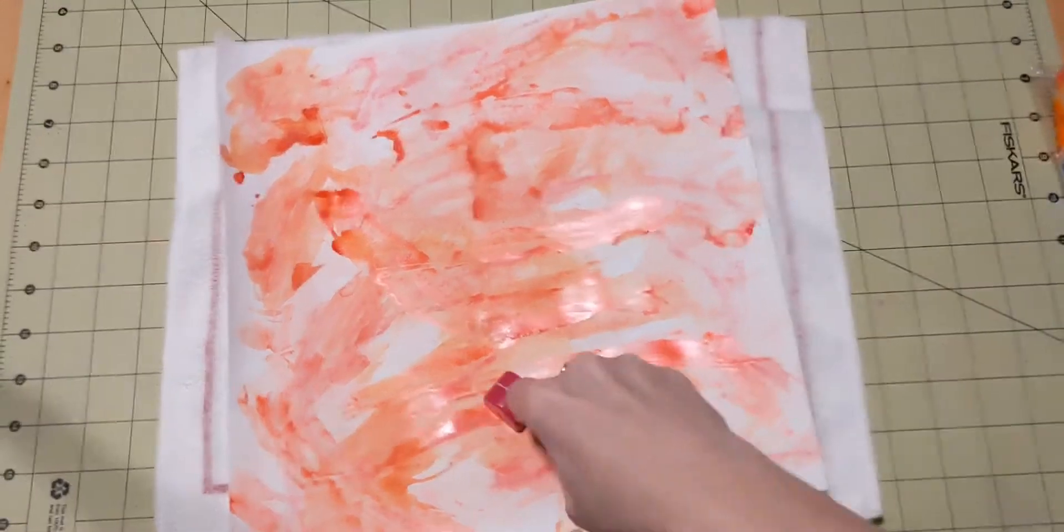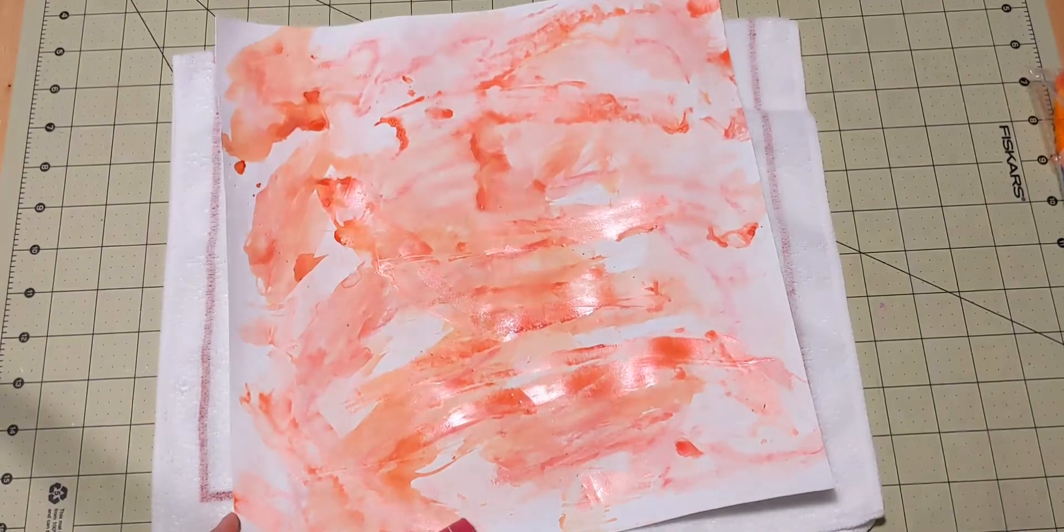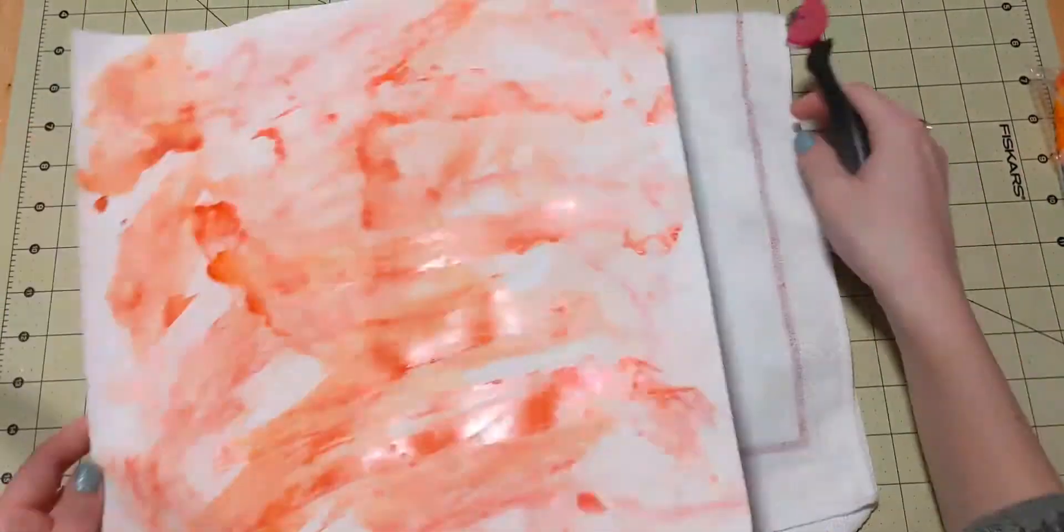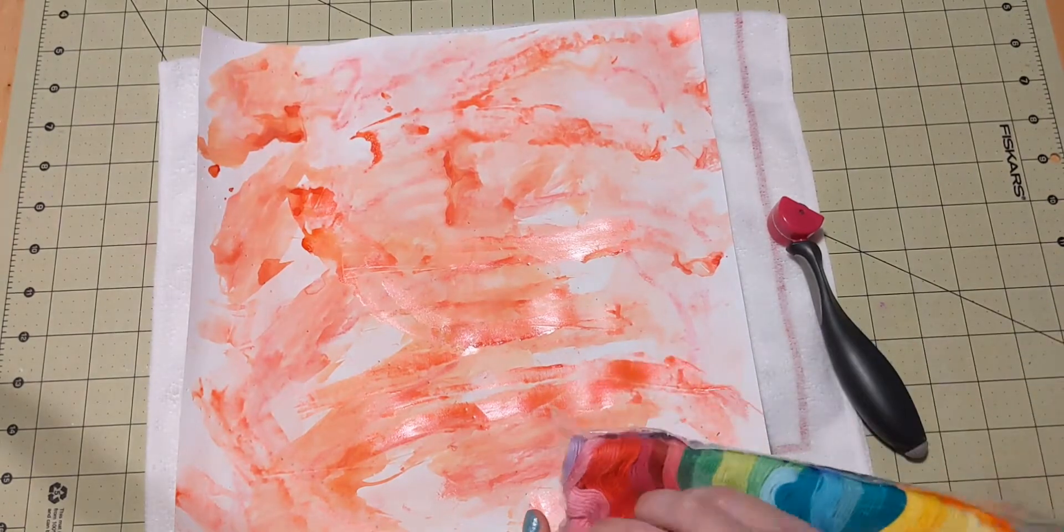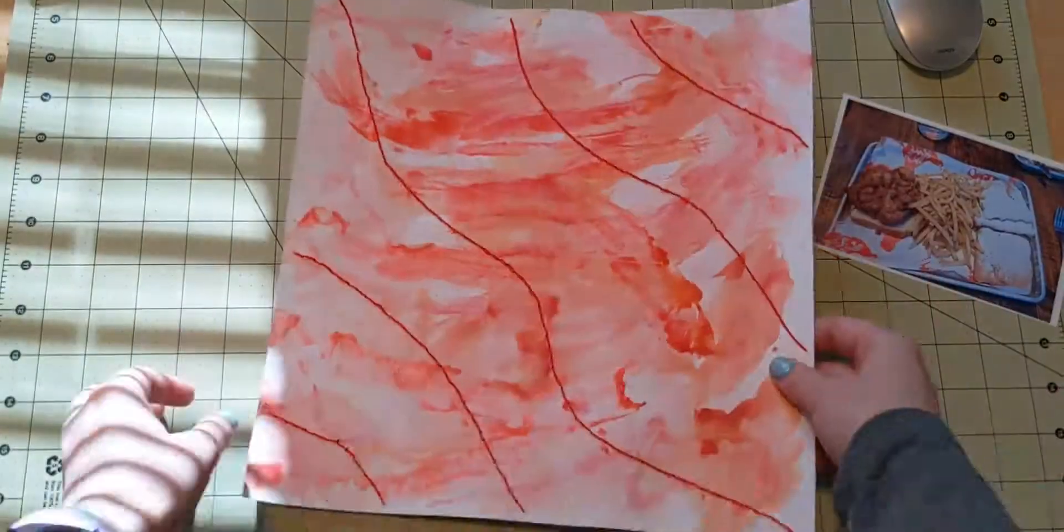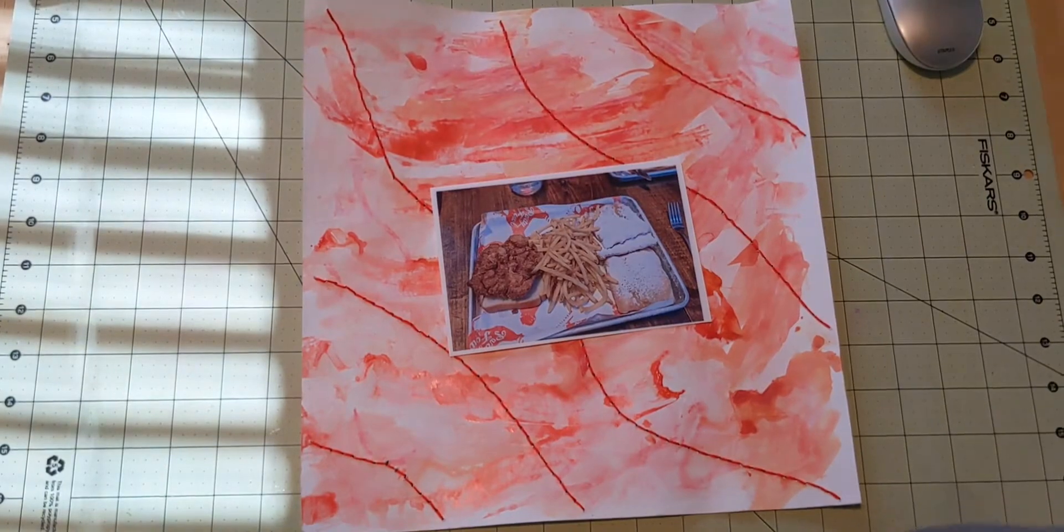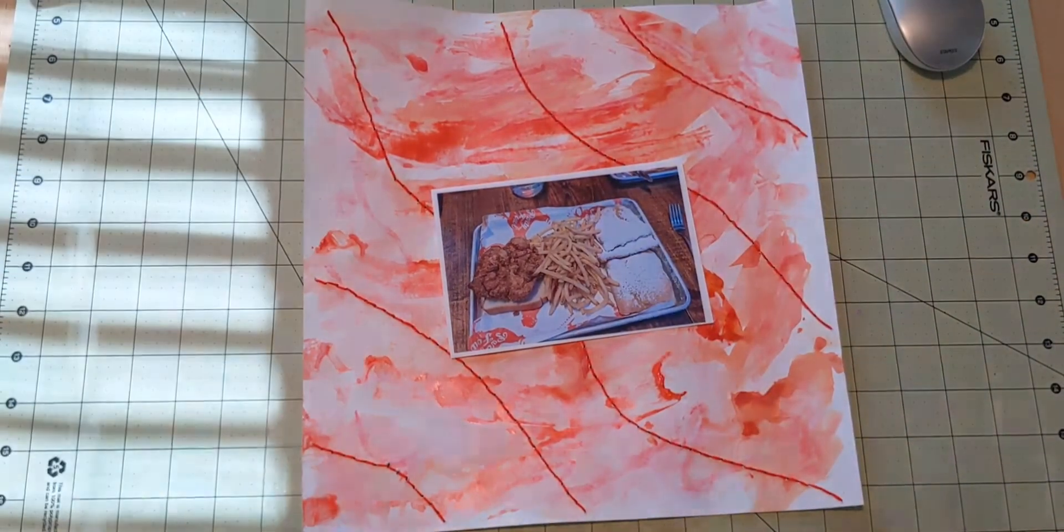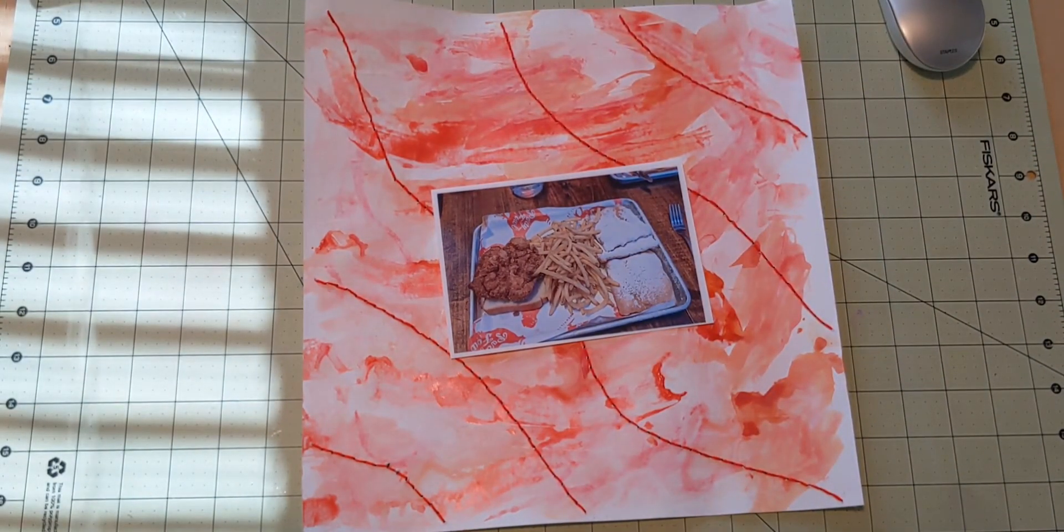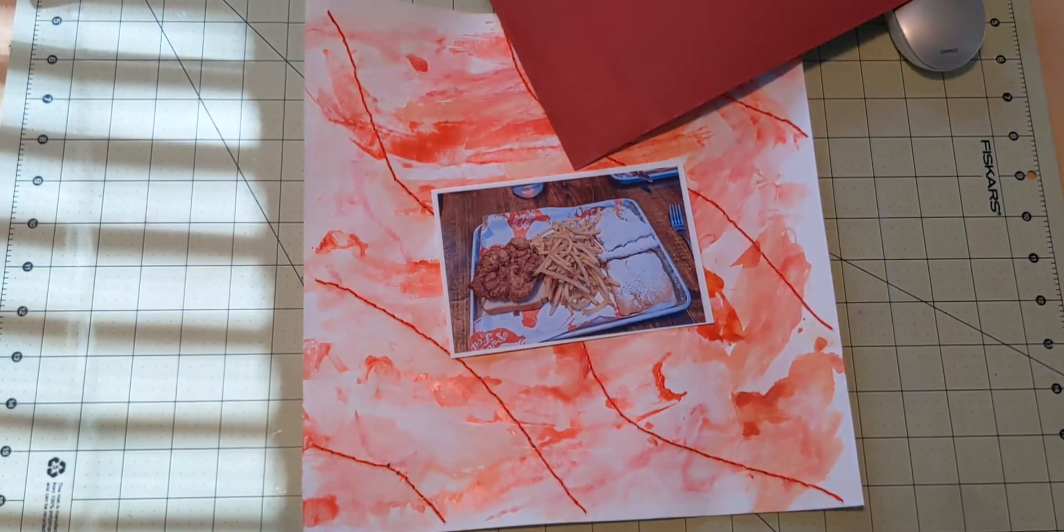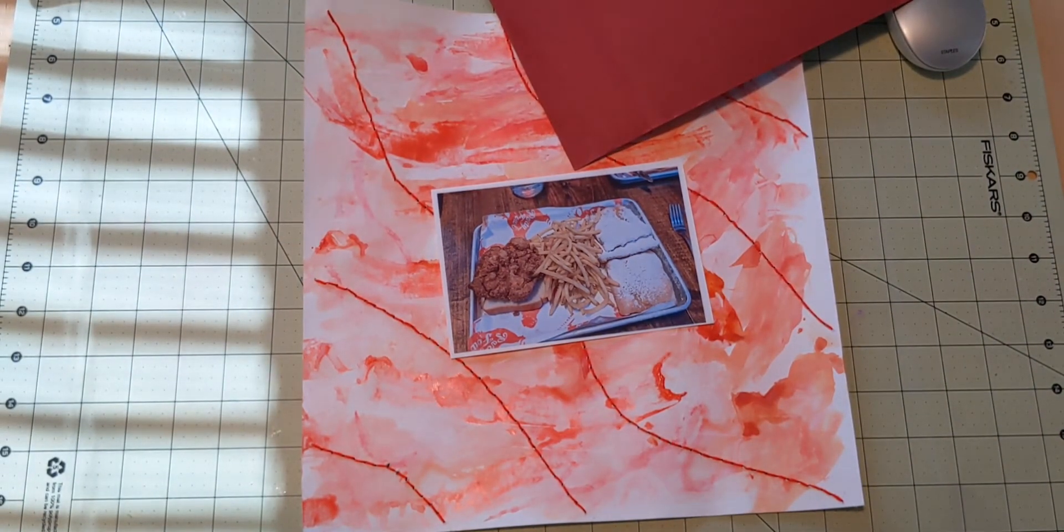So once it's all dry, I use my new We Are Memory Keepers paper piercing tool, and it gives little lines so that I can stitch there. I do not make you watch all the stitching. The stitching does take forever, but it's something that's new for me, and I'm enjoying doing it.